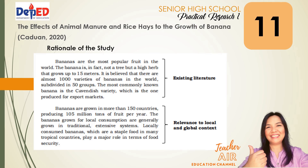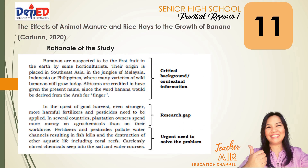The second paragraph includes write-ups on relevance to local and global context. Bananas are grown in more than 150 countries, producing 105 million tons of fruit per year. The bananas grown for local consumption are generally grown in traditional, extensive systems. Locally consumed bananas, which are a staple food in many tropical countries, play a major role in terms of food security. The third paragraph includes critical background and contextual information. Bananas are suspected to be the first fruit on earth by some horticulturists. Their origin is placed in Southeast Asia, in the jungles of Malaysia, Indonesia, or Philippines, where many varieties of wild bananas still grow today. Africans are credited with giving the present name, since the word 'banana' is believed to be derived from the Arabic word for finger.